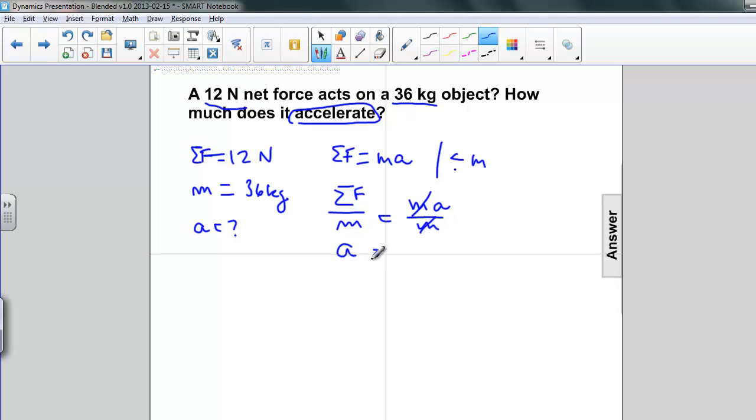and we get that A equals net force divided by m. Substitute all of your quantities. We have 12 Newtons divided by 36 kilograms.